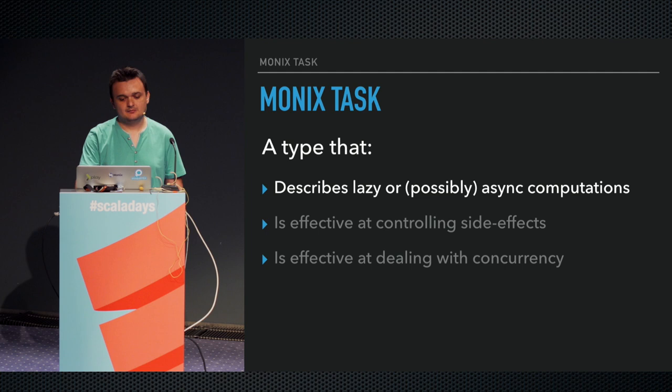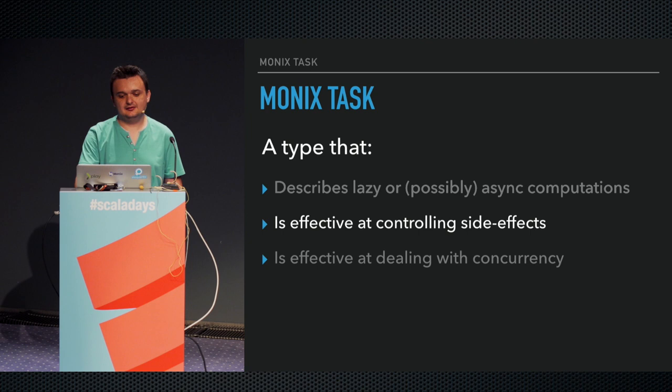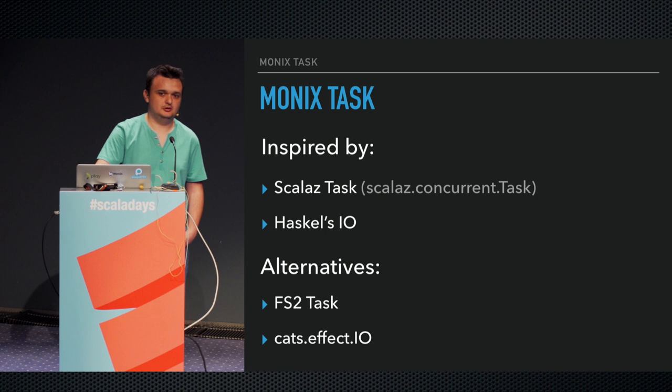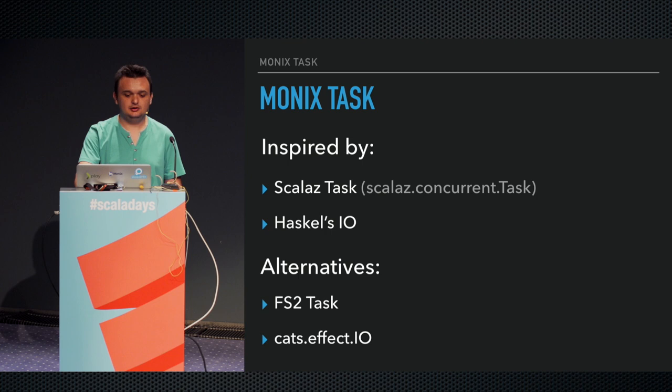Task is a type for describing lazy, possibly asynchronous computation. It's effective at dealing with and controlling side effects. For those familiar with Haskell, Scala's Task is basically equivalent to the IO type in Haskell. It's effective at dealing with concurrency. Monix stands on the shoulders of giants — it was inspired by the ScalaZ task implementation and by Haskell's IO.